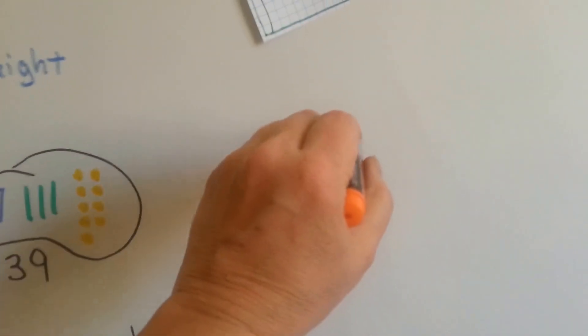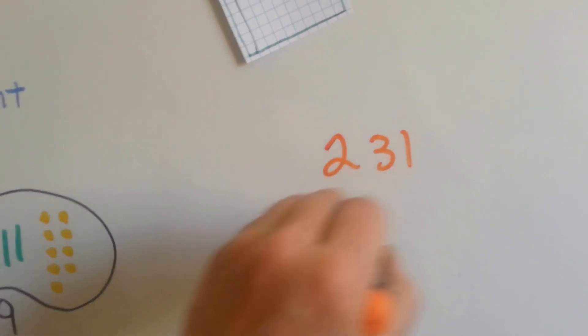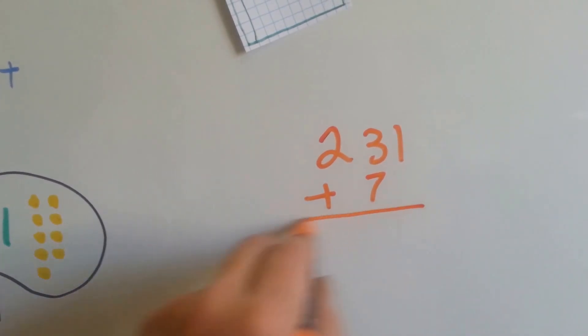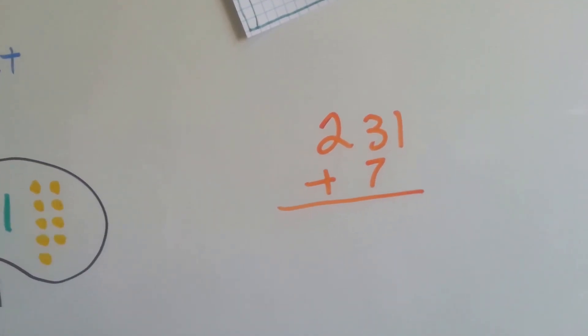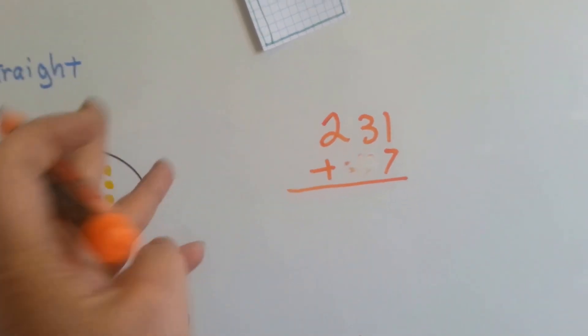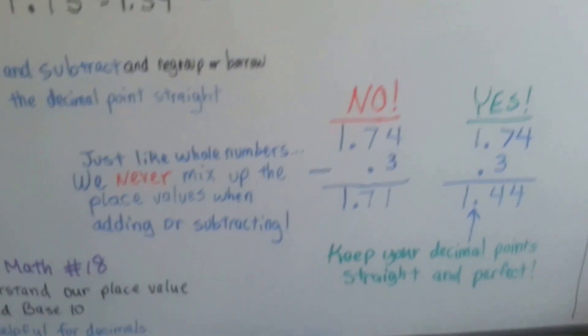When you're adding two hundred and thirty-one plus seven, you don't put the seven in the tens place, because then it would be like you're adding seventy. You would put the seven in the ones place, wouldn't you? Because otherwise, it would be adding wrong. Same thing in decimals.